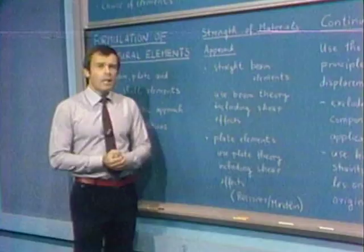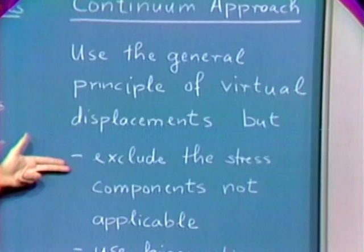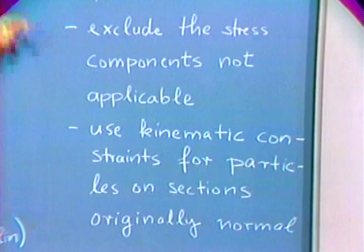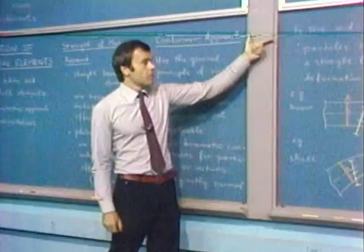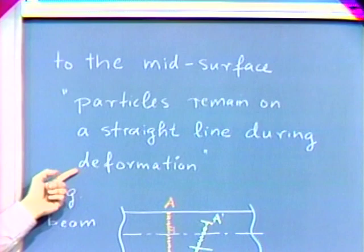As a second approach, we have the continuum mechanics approach, in which we use the general principle of virtual displacements. But we exclude the stress components not applicable. For example, in a plate, we set the stress through the thickness of the plate equal to zero. In addition, we also have to impose, in the use of the principle of virtual displacements, the kinematic constraints for particles on sections originally normal to the mid-surface — namely, we have to put the constraint into the structure that the particles remain on a straight line during deformation.